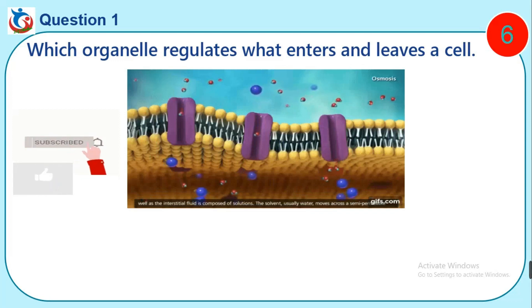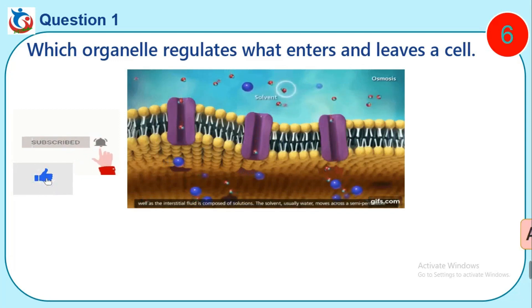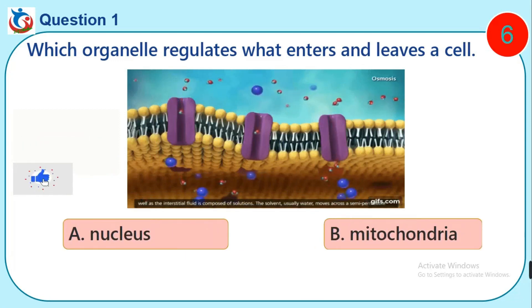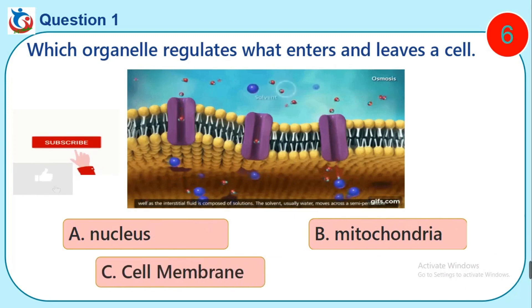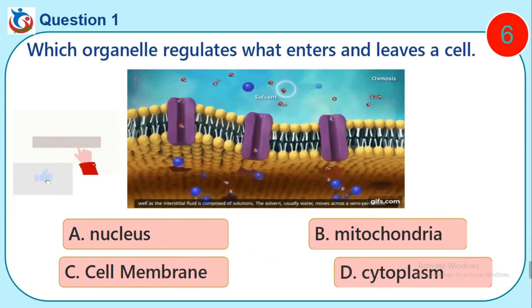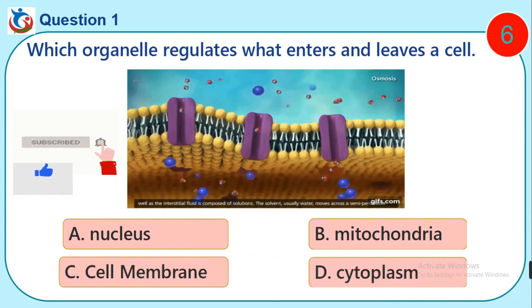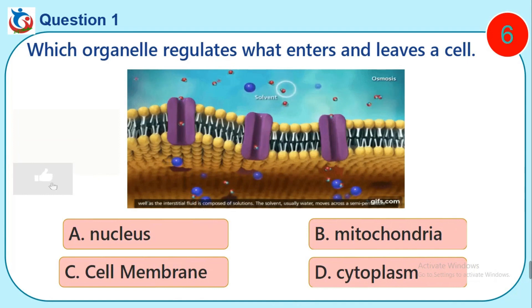Question 1. Which organelle regulates what enters and leaves a cell? A. Nucleus. B. Mitochondria. C. Cell membrane. D. Cytoplasm.